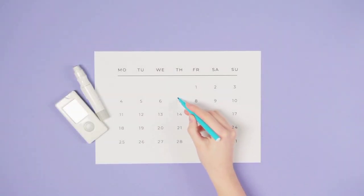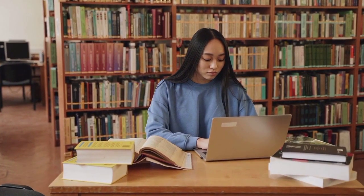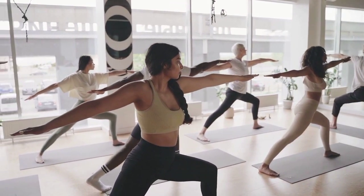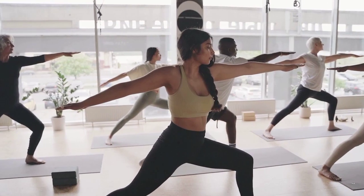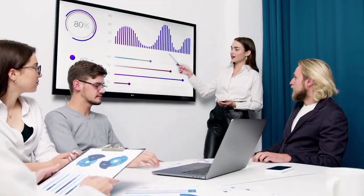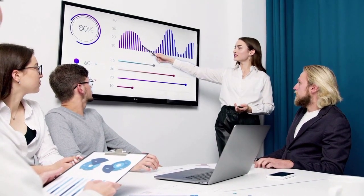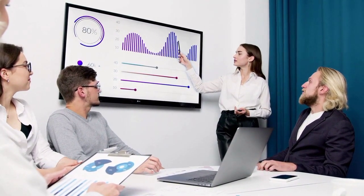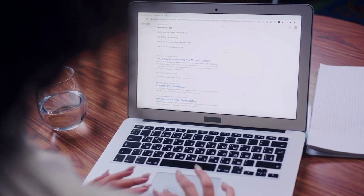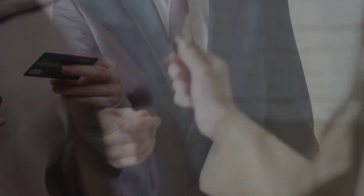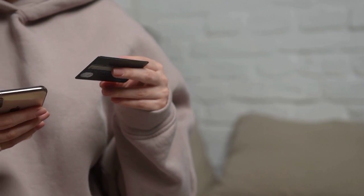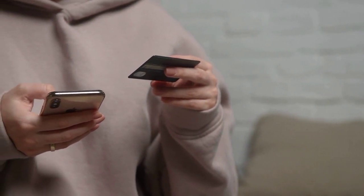Now let's bring these concepts to life with a real-world example. Imagine you run a yoga studio and you want to attract more students to your classes. You might bid on keywords like 'yoga classes near me' or 'beginner yoga sessions.' Your ad copy could highlight the benefits of yoga, such as stress relief and improved flexibility. And your bidding strategy might involve bidding higher for keywords with higher search volume or targeting specific times of day when people are more likely to be searching for yoga classes.